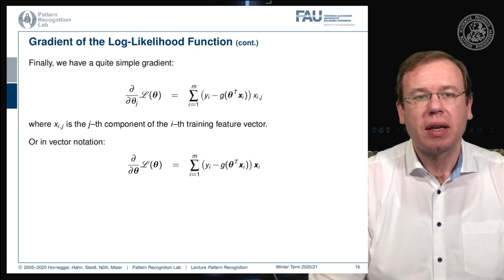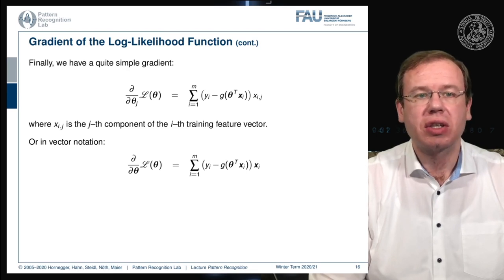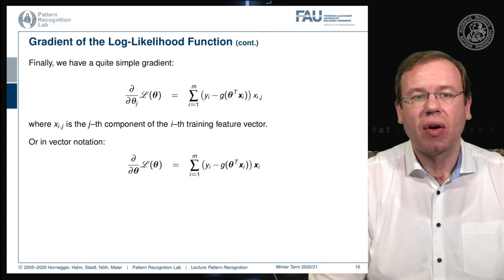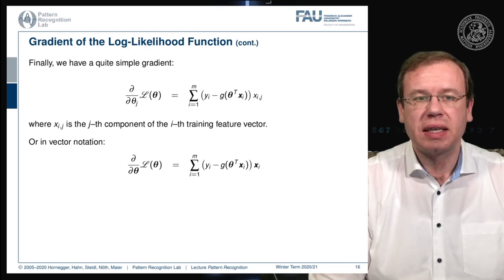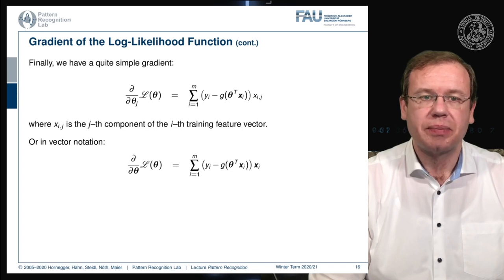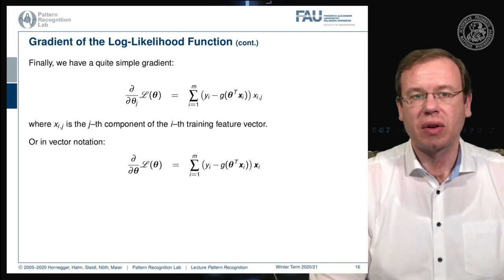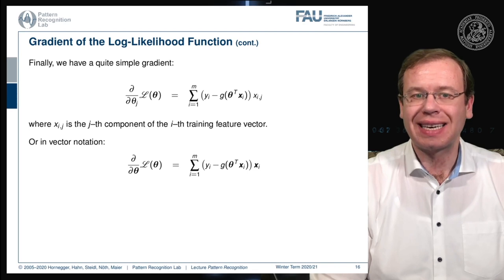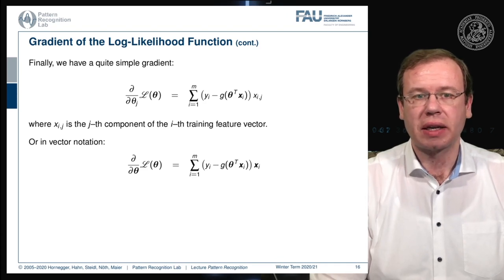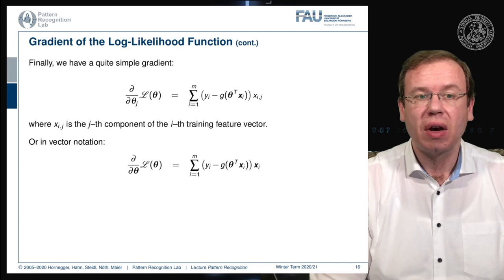We can rearrange slightly and bring it back to vector notation. The gradient of the log-likelihood function with respect to theta can be expressed simply as the sum of the sigmoid function with the current parameter configuration and the sample, subtracted from yi and multiplied with the actual feature vector. Now we want to also look into the Hessian, so we need to differentiate this again with respect to theta in order to construct the second order derivative of the log-likelihood function.